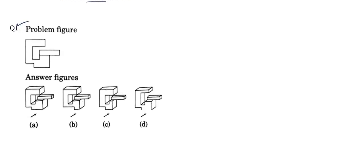In the very first question, you can see we have a figure and we need to find which one of these four is the 3D figure of the question. As you can see, option D is the most different option because here we have no line below, but you can see we have a line here. So option D is automatically eliminated and cannot be the correct answer. The best way to do these sums is to eliminate the wrong answers one by one and we will be left with the correct answer only.